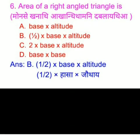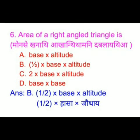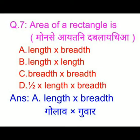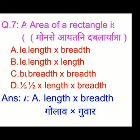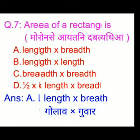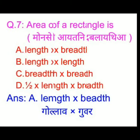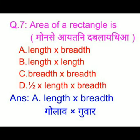The area of a right angle triangle — we have four options and the right answer is option B: half into base into altitude. The area of a rectangle — we have four options and the right answer is option A: length into breadth.